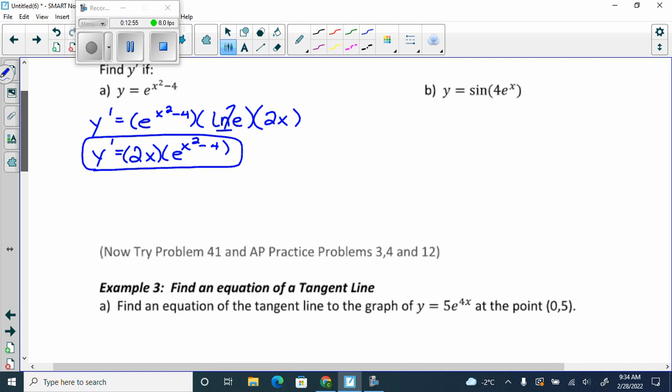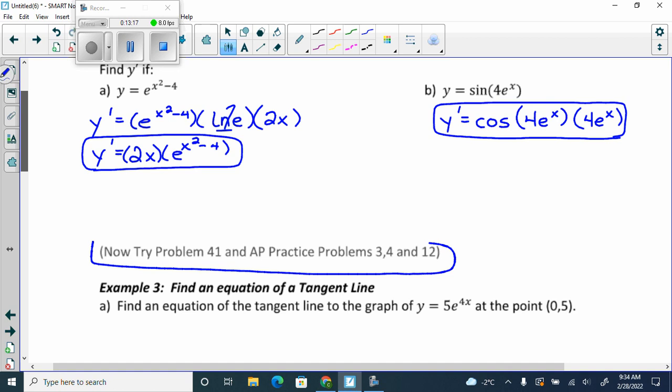Shh. Quiet, please. So we have Y equals sine 4E to the X. The derivative of sine is? Cos. Positive because sine is not a C. And then we rewrite it. And then the derivative of 4E to the X is? 4E to the X. And you can stop like this or know that it can move to the front. It doesn't really matter. Okay.